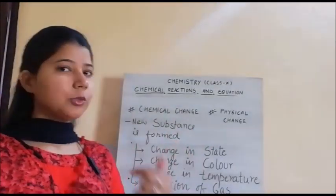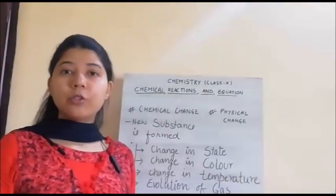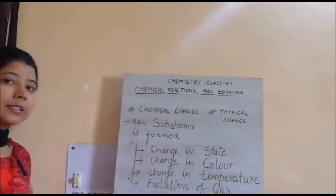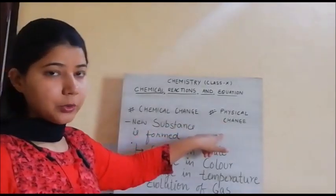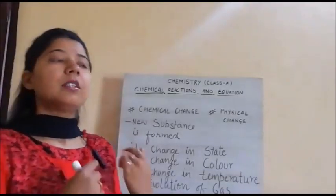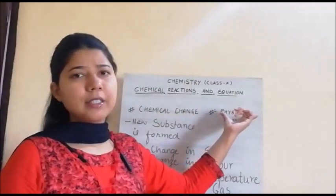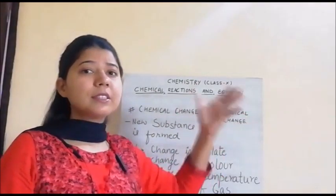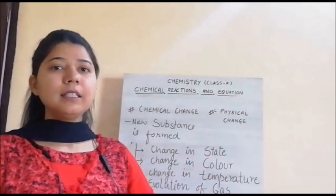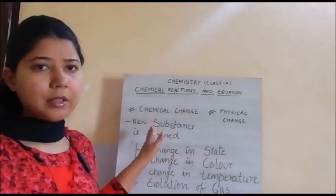So what is a physical change? If there is no formation of a new compound, we call that change a physical change. Physical change involves things like change in color, change in state, change in size and shape - these are all physical factors. So if there is a change only in these physical things - color, size, shape - we call that a physical change. If something else is occurring, we consider that a chemical change.